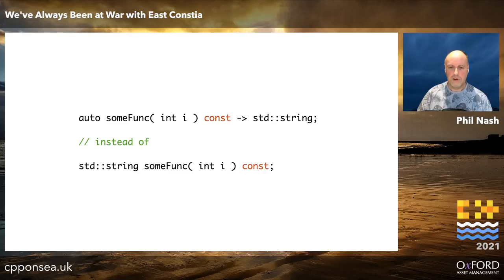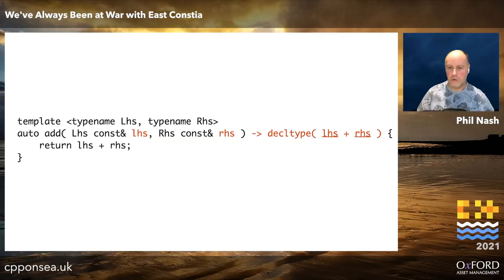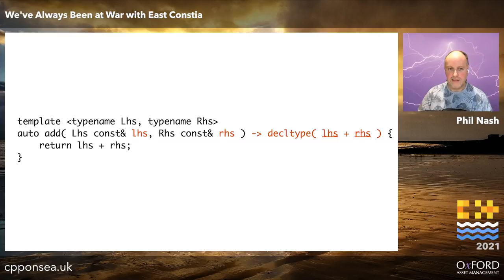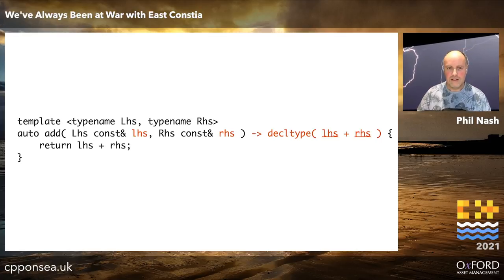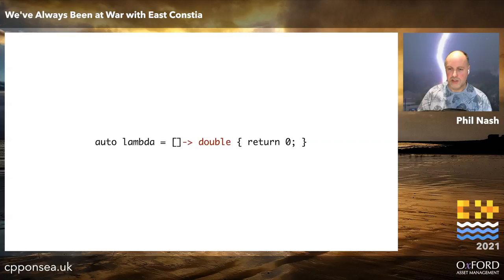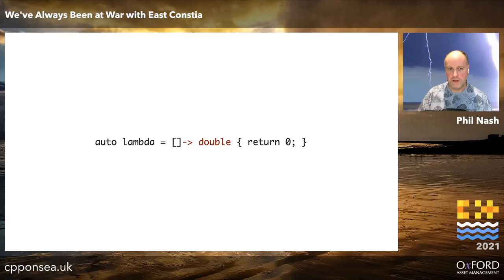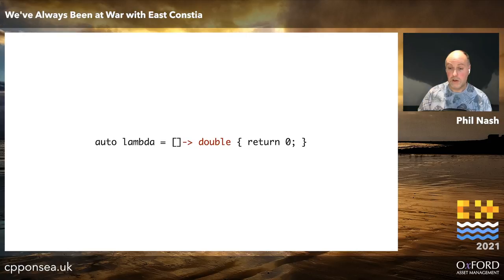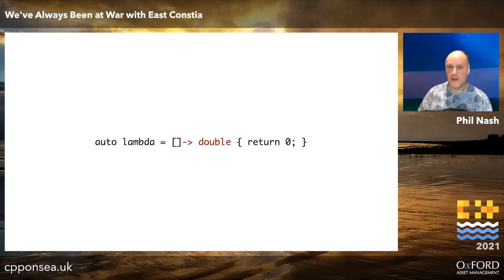So why would you ever actually use this? There are cases where you have to, of course. The canonical example is where the return type depends on something named in the argument list, which isn't in scope before we get to the argument list — so it has to come after, and thus the trailing return type was born. It's also consistent with lambdas: if you do explicitly mention the return type, you have to put it as a trailing return type after the arrow, after any argument list. Nice consistency there.